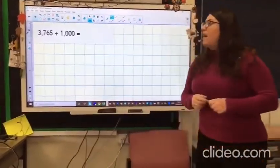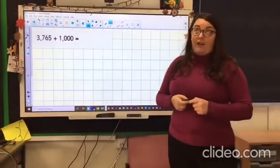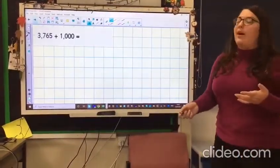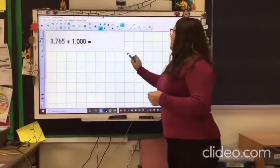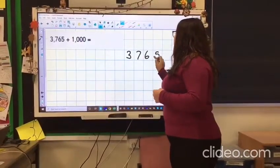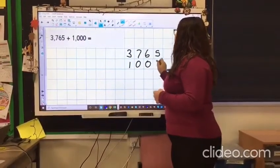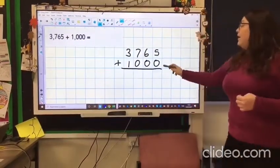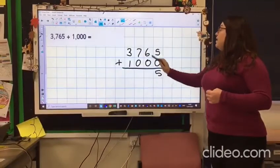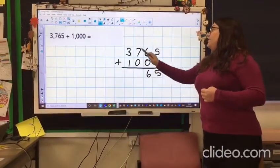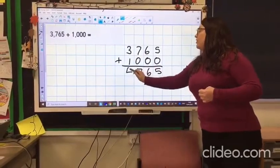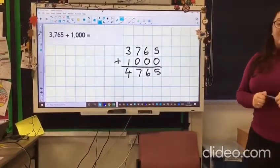Okay, 3,765 add 1,000. Again you can probably do this in your head, but using the column method: 5 add nothing is 5, 6 add nothing is 6, 7 add 0 is 7, 3 add 1 is 4. So your answer should have been 4,765.